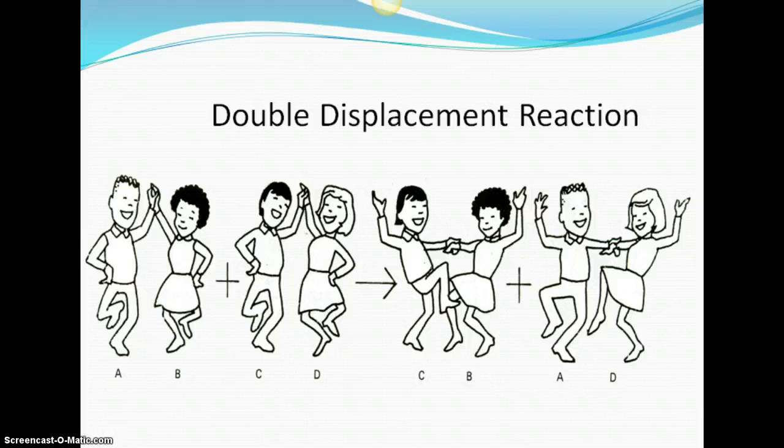And that's the end of the types of reactions. So again, you have five types of reactions you need to be able to identify and then be able to explain how you know a chemical reaction is occurring.